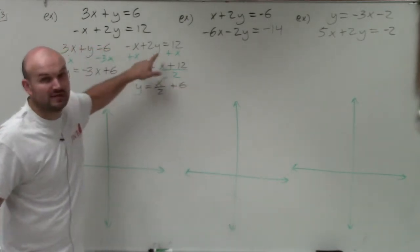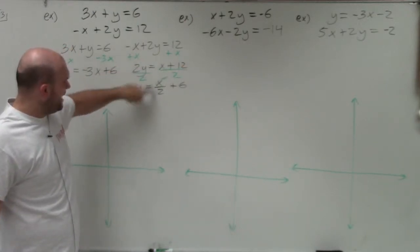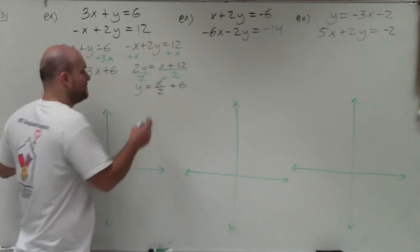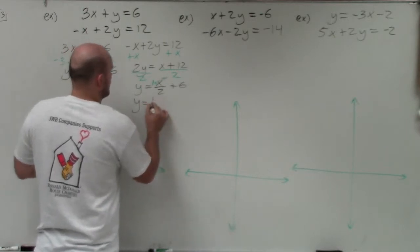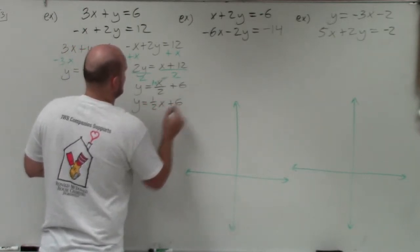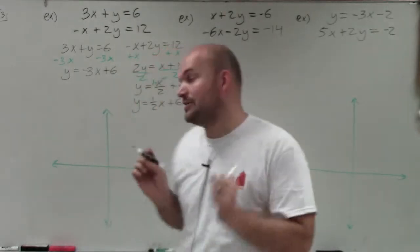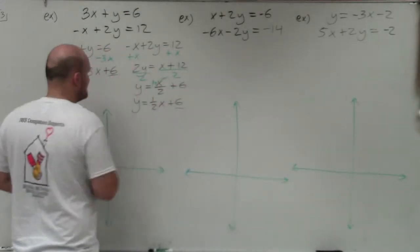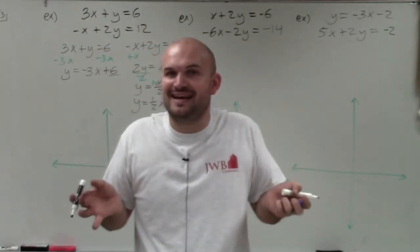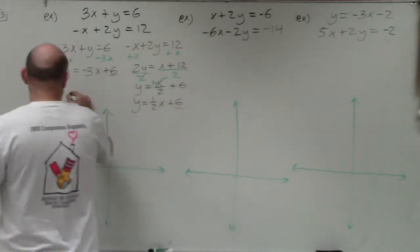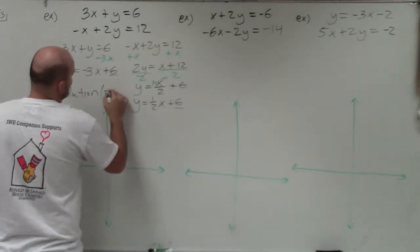Remember to divide the 2 into both the x and the 12. This gets confusing for some students — what is the slope? There's a 1 there, so we can write this as y equals 1 half x plus 6. Now, I notice both equations have the same y-intercept of 6. So if they share the y-intercept, what do you think the point is where they intersect? The y-intercept. So the solution is (0, 6).